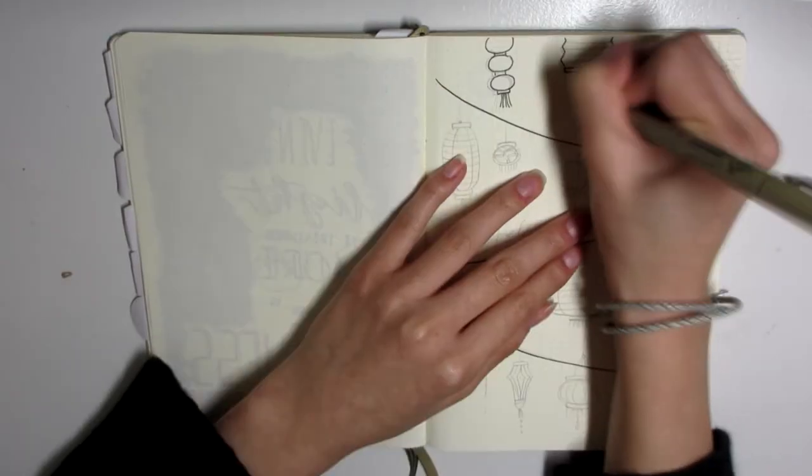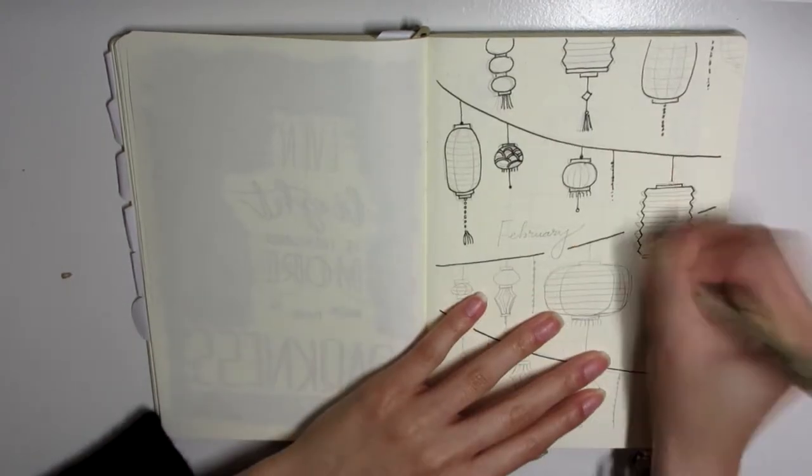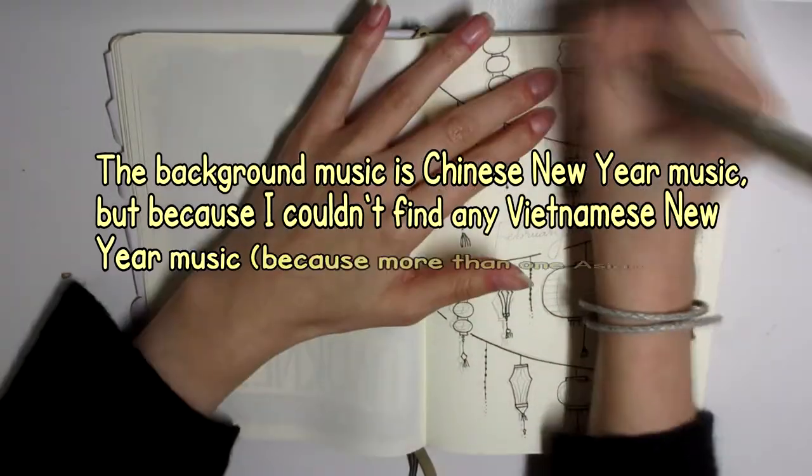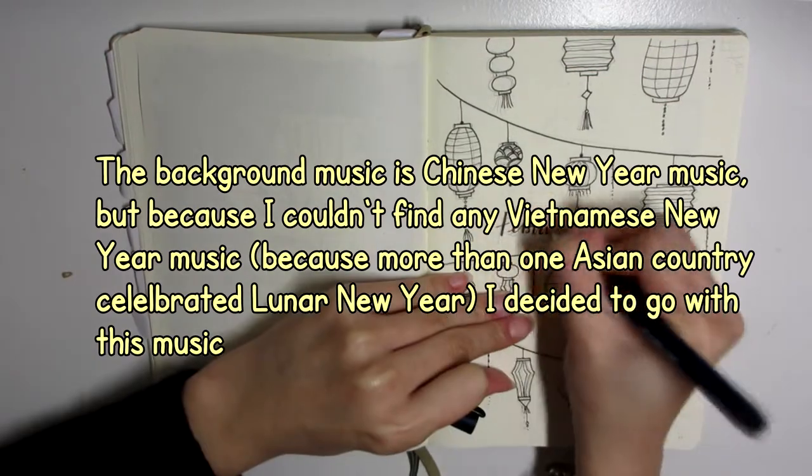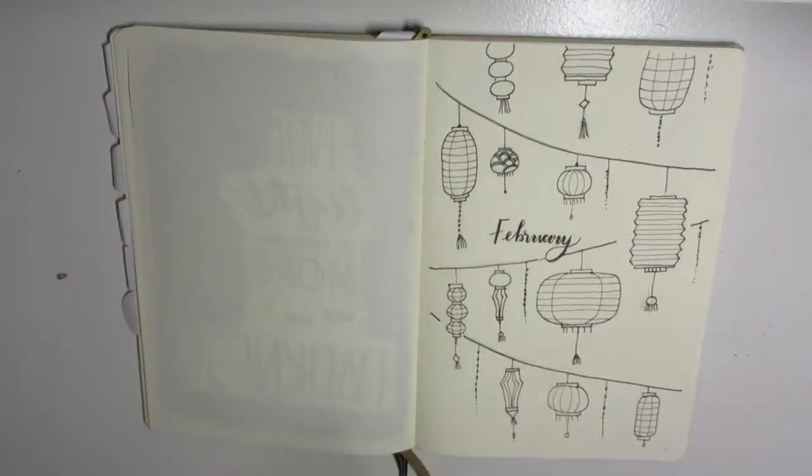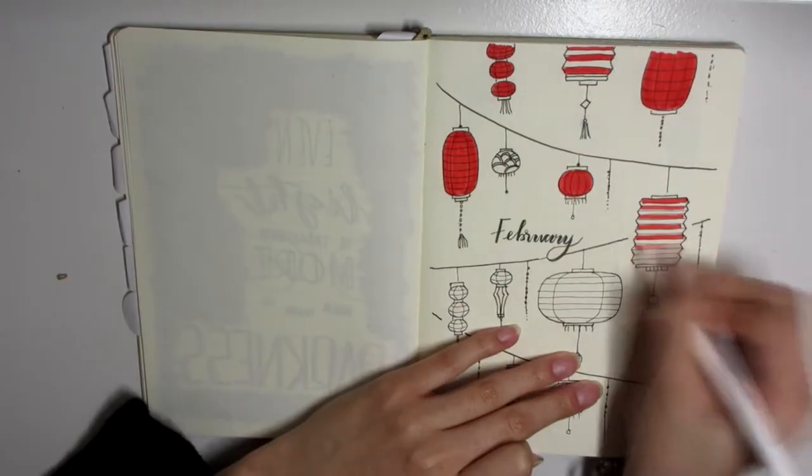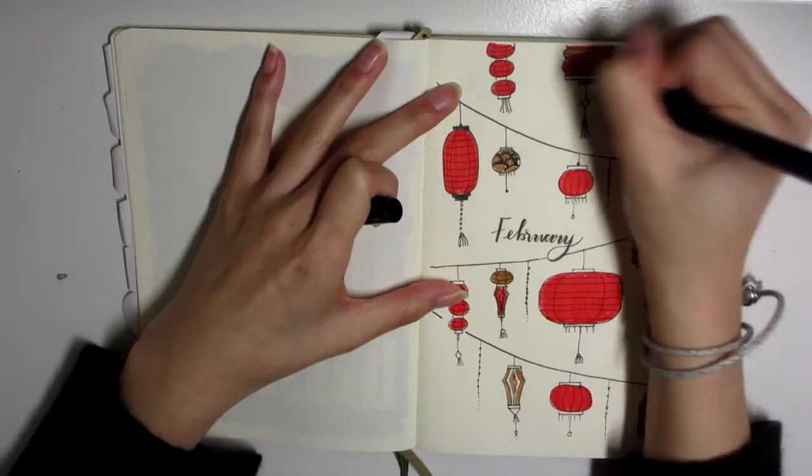Hey guys, it's Mary and I'm back again with another plan with me for you, this time for the month of February. As you guys can probably tell if you're Amanda or RachLee viewers, this theme is the theme of lanterns and this will be a spin-off recreation of Amanda's lantern theme.